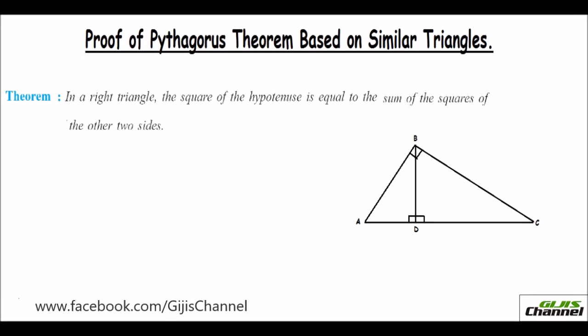Hello, this is Vasavi from Atom Tuition. Today let us learn the proof of Pythagoras theorem based on similar triangles. The theorem states: in a right triangle, the square of the hypotenuse is equal to the sum of the squares of the other two sides.